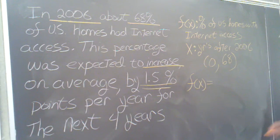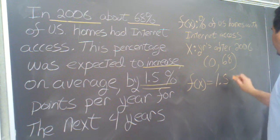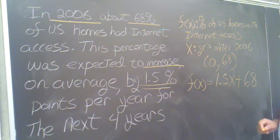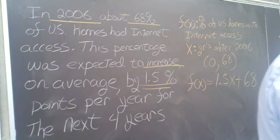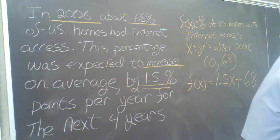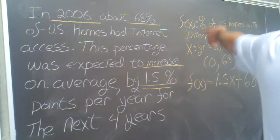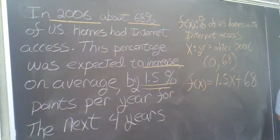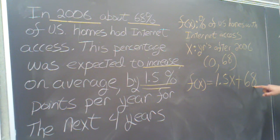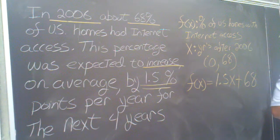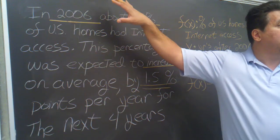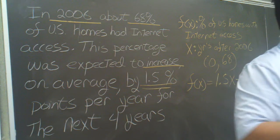f(x) equals slope — 1.5 — times x, plus the y-intercept, 68. A reader should be able to fully explain what is written on the left merely by looking at what is on the right. My output is percentage of homes with internet access. My input is years after 2006. This formula tells me that in 2006, 68% of U.S. homes had internet access, and that was increasing by 1.5% per year. The formula should read like the words do — it's just a different way of writing the same information.